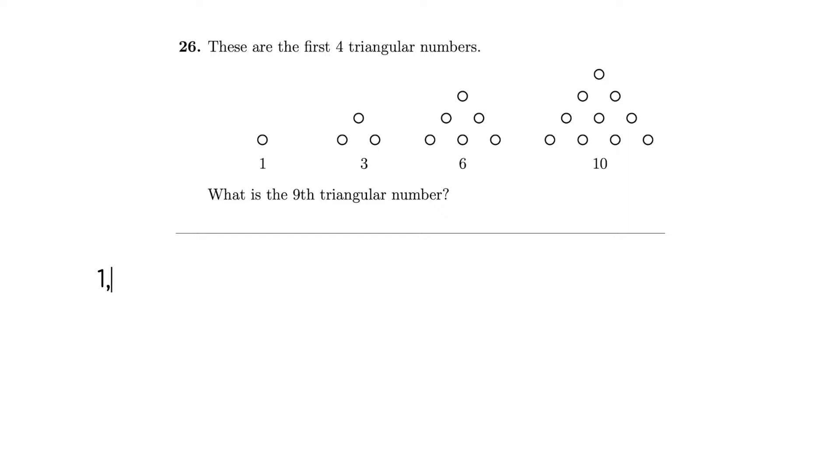So you've got one, three, six, ten. Here we're just adding one, two, three, and four. So what's next? Well next we add five. So I'm just going to get rid of this. We add five to ten. That's going to give 15. We add six to 15 because we're adding one more every single time. That's going to be 21.